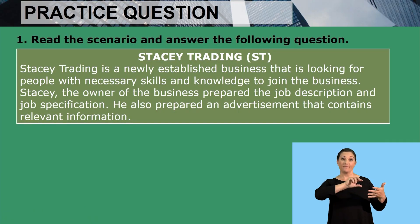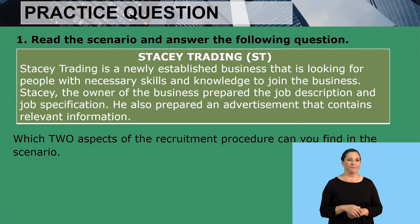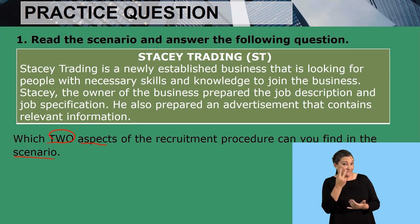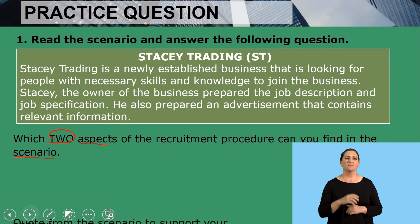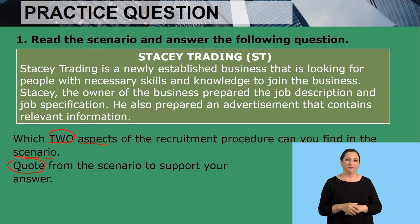Let's get straight to our first application question, which says we must read the scenario and answer the questions. The question asks which two aspects of the recruitment procedure can you find in the scenario, and we need to quote from the scenario to support our answer. Remember, grade 11s, that when you are quoting, you are taking the statement as it appears from the scenario and writing it down as it is. Now let's go through the scenario together.